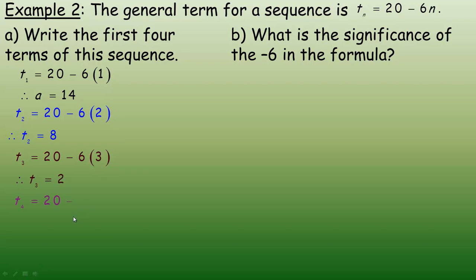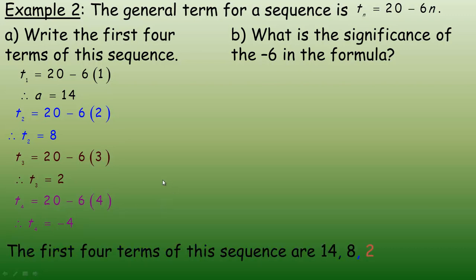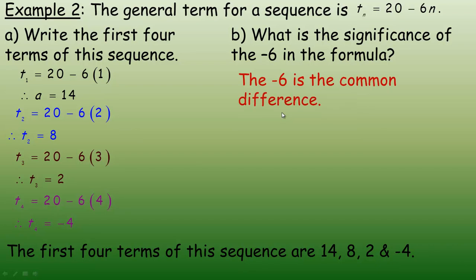For the fourth term, we put 4 in place of n: 20 minus 6 times 4 equals 20 minus 24 equals negative 4. So the first four terms of the sequence are 14, 8, 2, and negative 4. Part b asks about the significance of the negative 6 in the formula. Notice the terms are going down by 6, so the negative 6 is the common difference — it's how much the term changes from one term to the next.